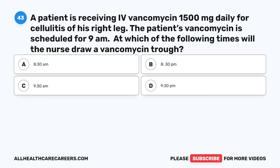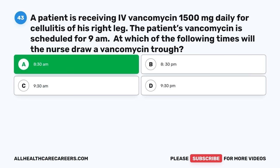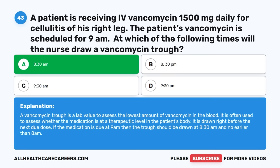Question forty-three: A patient is receiving IV vancomycin 1,500 mg daily for cellulitis. The vancomycin is scheduled for 9 a.m. At which time will the nurse draw a vancomycin trough? A. 8:30 a.m. B. 8:30 p.m. C. 9:30 a.m. D. 9:30 p.m. The correct answer is A, 8:30 a.m. A vancomycin trough assesses the lowest amount of vancomycin in the blood to determine if the medication is at a therapeutic level. It is drawn right before the next due dose — if the medication is due at 9 a.m., the trough should be drawn at 8:30 a.m. and no earlier than 8 a.m.